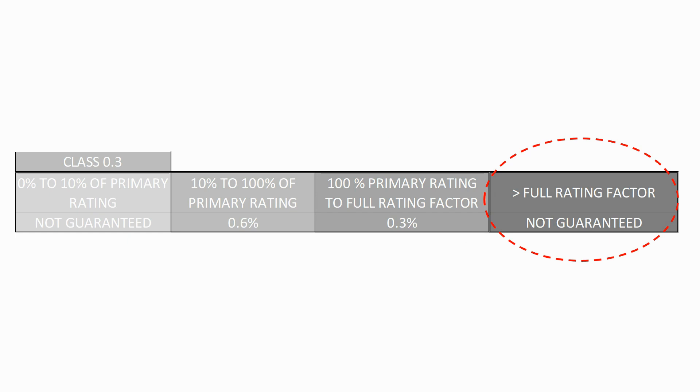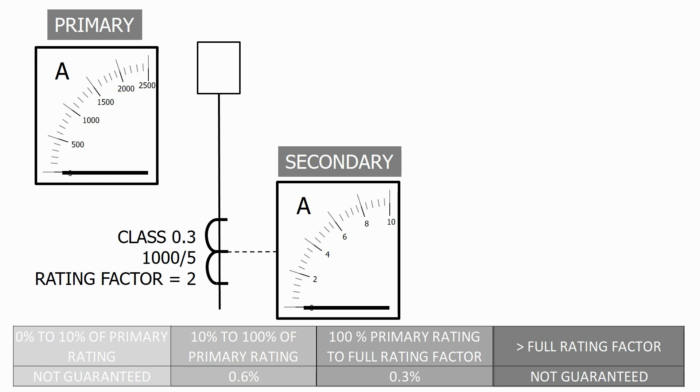Let's have a look in detail at what these figures mean. Here we have a typical feeder circuit with the class 0.3 metering CT which has a ratio of 1000 to 5 and a rating factor of 2.